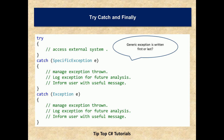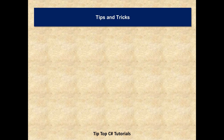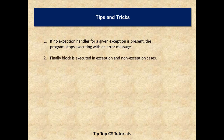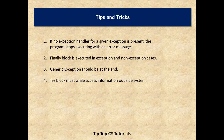Code in the finally block is executed whether or not an exception is thrown. In the finally block you can release resources, for example closing any streams or files you have already opened. Tips and tricks to remember: if no exception handler for a given exception is present, the application will close abruptly with an error message, so it's better to have exception handling. Finally block is executed irrespective of whether an exception happens or not. Generic exceptions should be at the end. The try block must be used while accessing information outside your system.